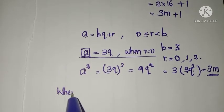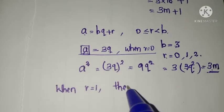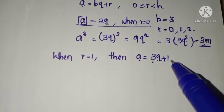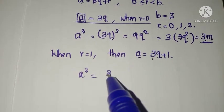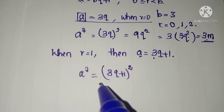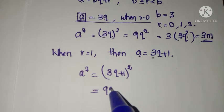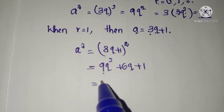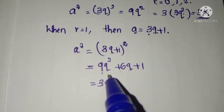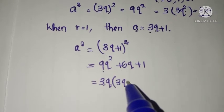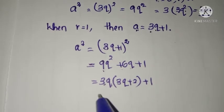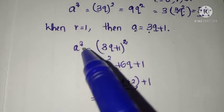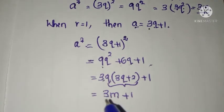When R = 1, A is equal to 3q plus 1. Now take its square: A squared = (3q + 1) squared. Using the identity (A + B) squared, this expands to 9q squared plus 6q plus 1. From the first two terms, we can take 3q as common, giving 3q(3q + 2) plus 1. Taking the bracket 3q(3q + 2) as a new integer M, the square of A can be written as 3M plus 1.